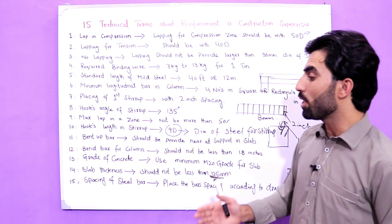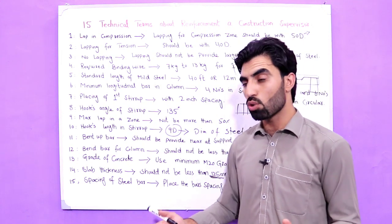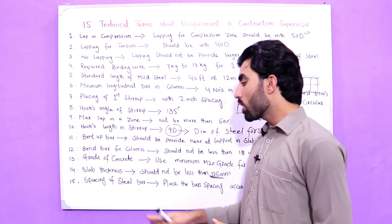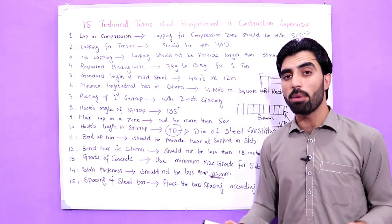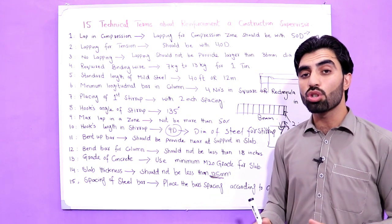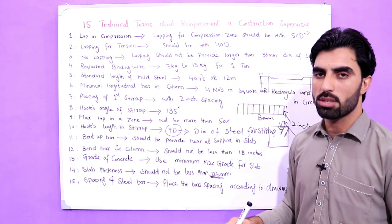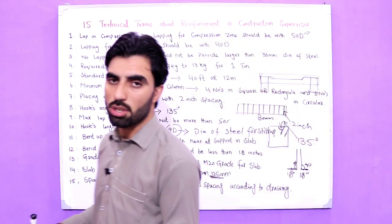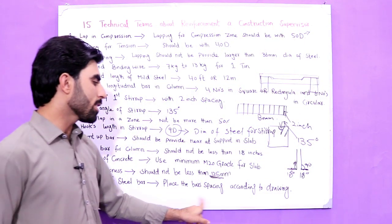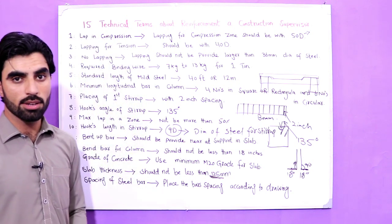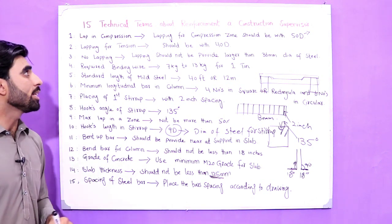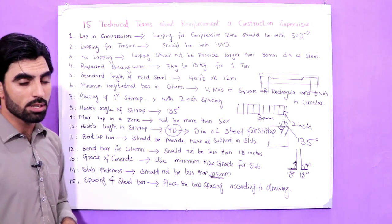The fifteenth term is spacing of steel bars. The spacing of steel bars — for main bars, distribution bars, and other RCC structures — should be placed according to the structural drawing. Place the bar spacing as per the design drawing for your specific project.